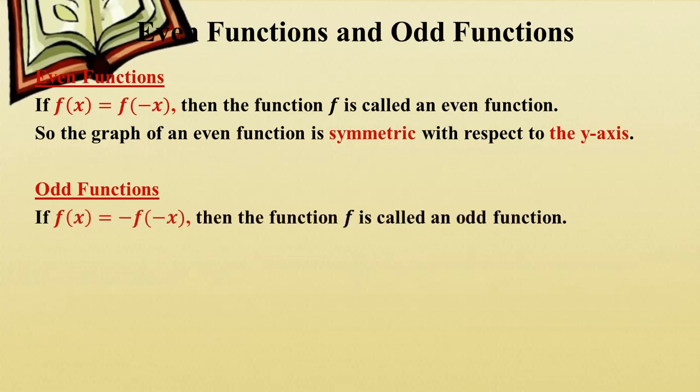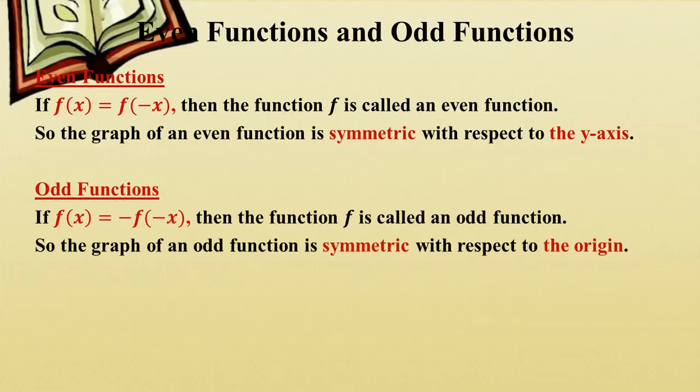If f(-x) equals minus f(x), then the function is called an odd function. The graph of an odd function is symmetric with respect to the origin. The origin is the point (0, 0).